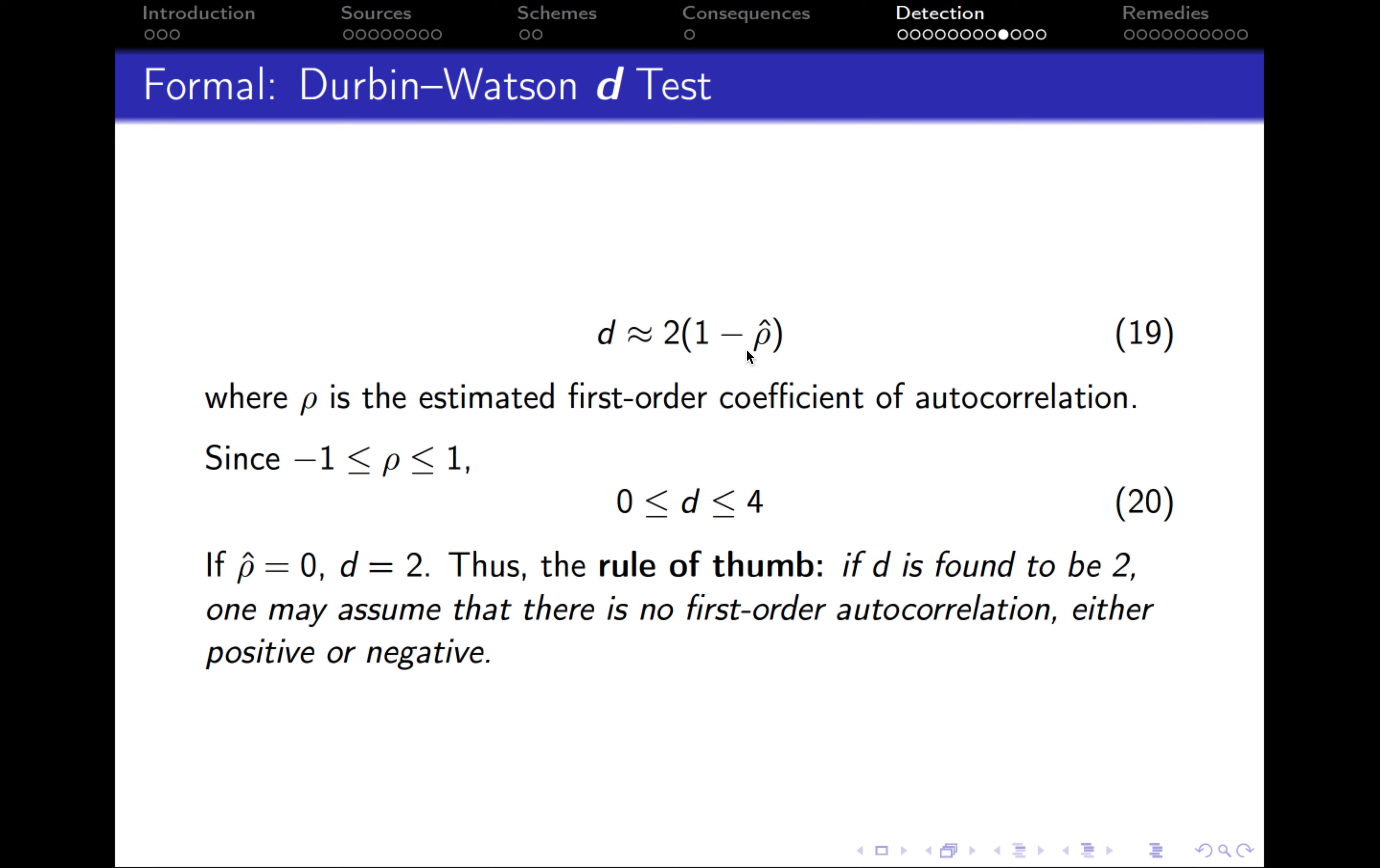So let's see. If, for example, the rho coefficient is equal to negative 1, we get 1 minus minus 1, so actually 2, and D is equal to 4. And if rho is equal to 1, we get that 1 minus 1 is 0, 2 by 0. The D statistic is equal to 0. So those are the boundaries.